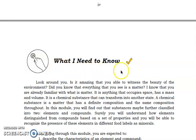Ano nga ba ang dapat natin malaman? Let's start with matter. Lahat po na nakikita natin sa paligid natin ay nakukonsider natin na matter. Alam ko, nung elementary, na-discuss na po or na-define ang matter. We all know that matter is anything that occupies space and has mass and volume. It is a chemical substance that can transform into another state. Chemical substance is a matter that has a definite composition and the same composition throughout.